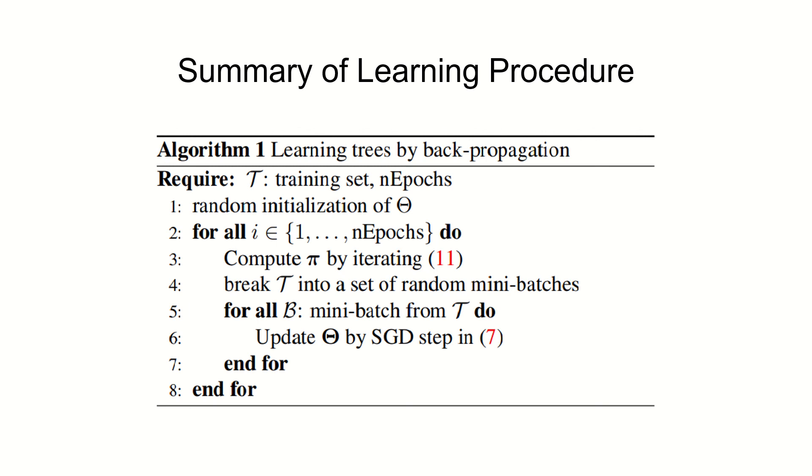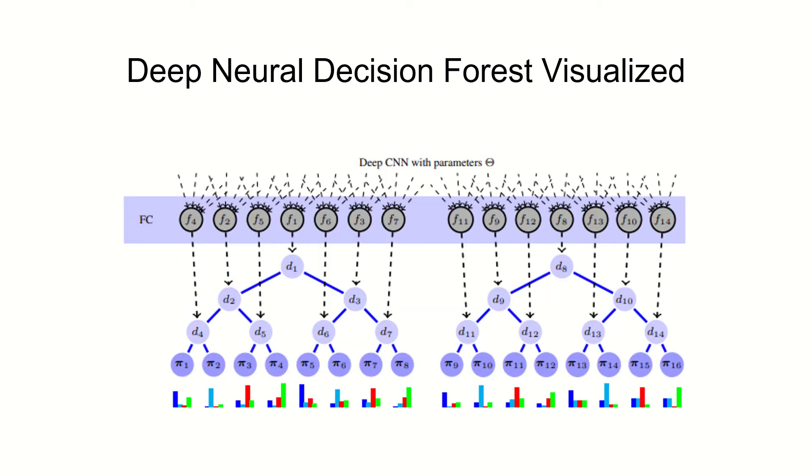After doing all this, this is how our final product looks like. A beauty I would say. Deep CNN on top, fully connected layer in the middle giving out functions to all internal nodes in the decision trees below, making easier routes for samples to reach leaf nodes where output will be distributed over all class labels. It's a very elegant way of designing it.